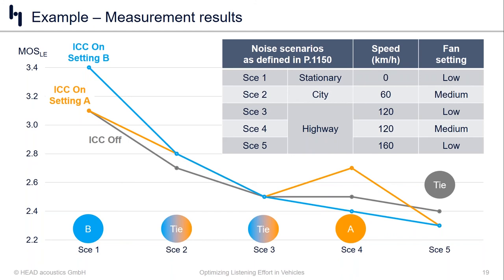This particular vehicle did not have an ANC system — only ICC. No matter how we tuned the system, we were only able to improve the listening effort by somewhere between 0.2 and 0.4 MOS points. That's still positive, but there is a ceiling on how high we can go without an ANC system. Having a dedicated ANC system allows us to break through that ceiling significantly, as it reduces overall cabin noise and improves the signal-to-noise ratio, giving the ICC system more signal to work with and less noise to contend with — a clear win-win.